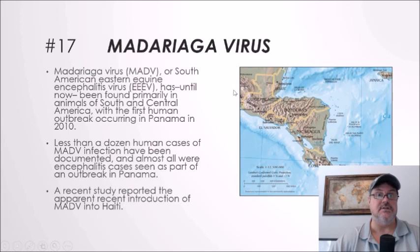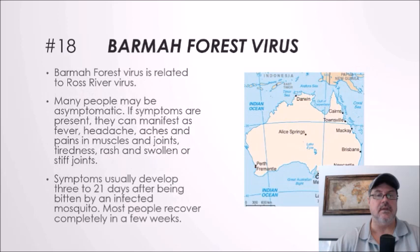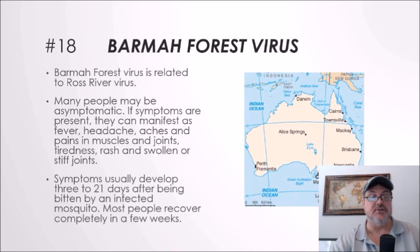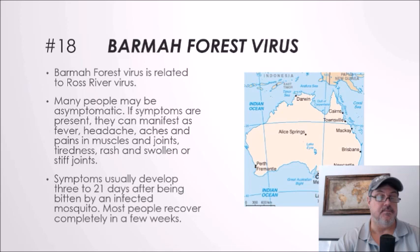Number eighteen: Barmah Forest virus. Barmah Forest virus is related to Ross River virus and was initially found in Victoria, Australia. Many people may be asymptomatic. If symptoms are present, they can manifest as fever, headache, aches and pains in the muscles and joints, tiredness, rash, and swollen or stiff joints. Symptoms usually develop 3 to 21 days after being bitten by an infected mosquito, and most people recover completely within a few weeks.